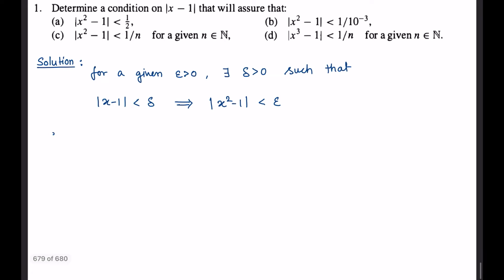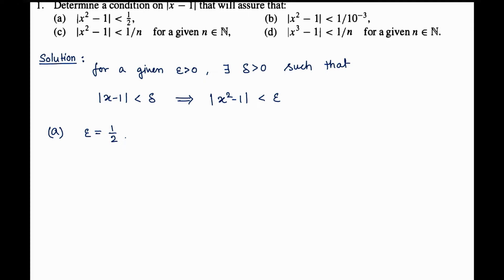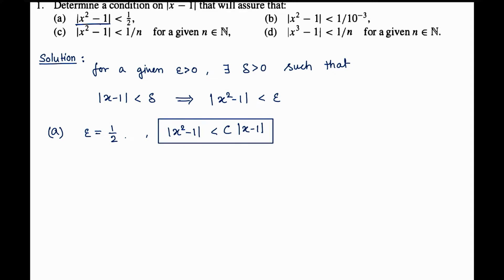Consider part (a). In this case, epsilon is 1/2. To find delta, we need to rewrite the left-hand side of the given inequality as |x² - 1| less than some constant times |x - 1|. This is the target we need to achieve. Since |x² - 1| can be rewritten as |x + 1| · |x - 1| — let's call this equation 1.